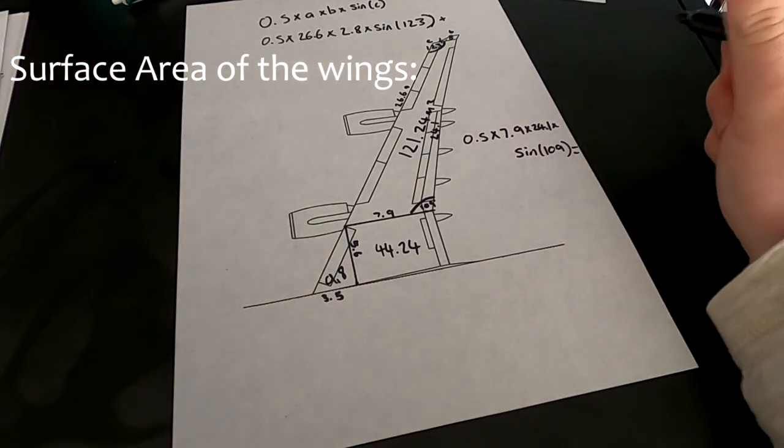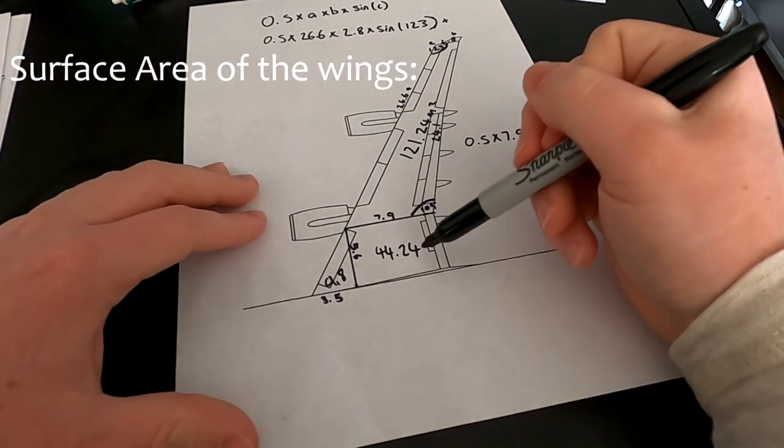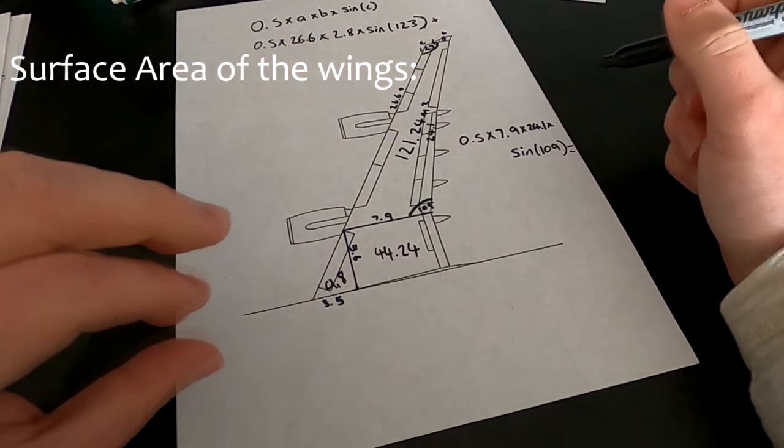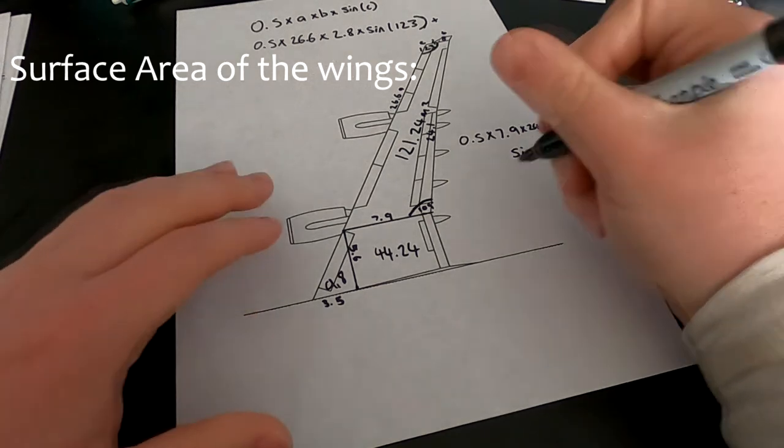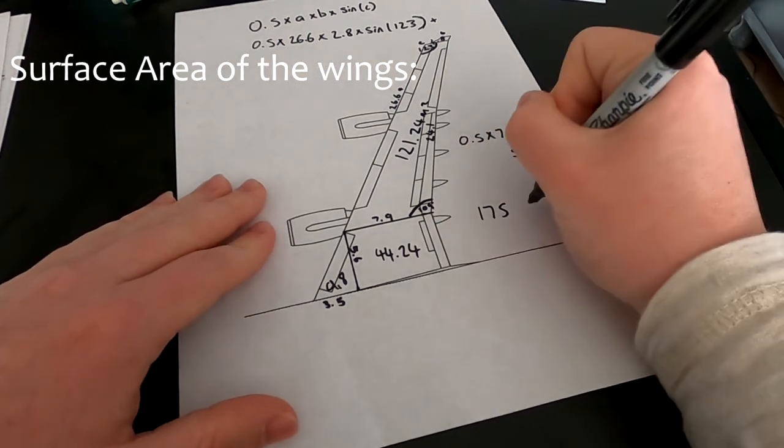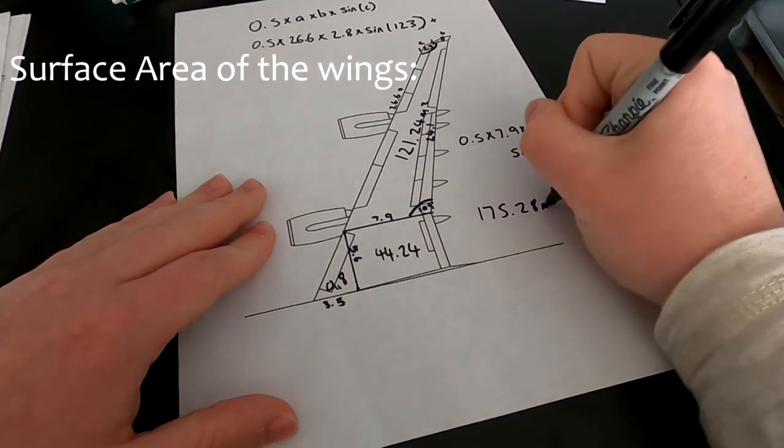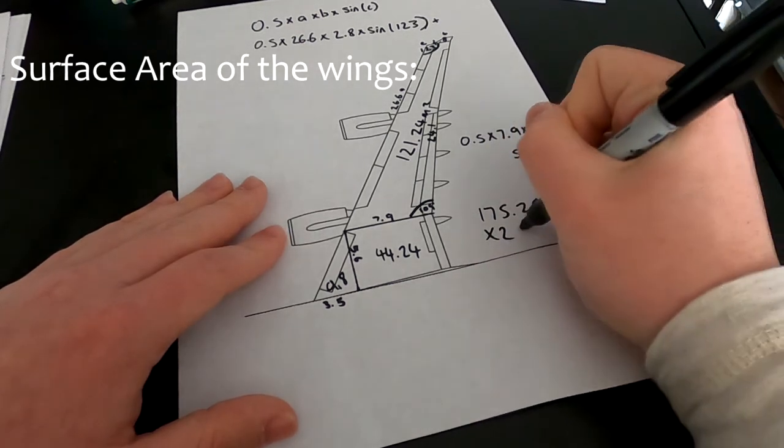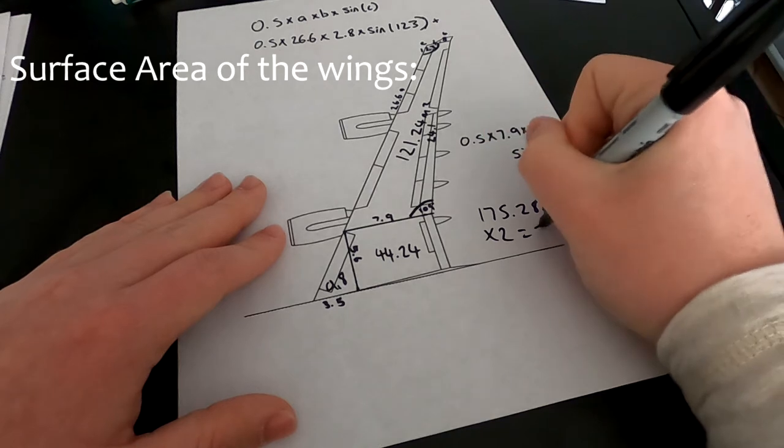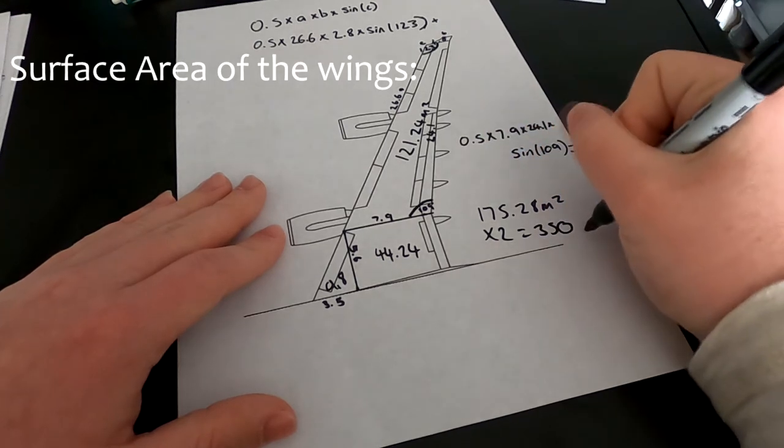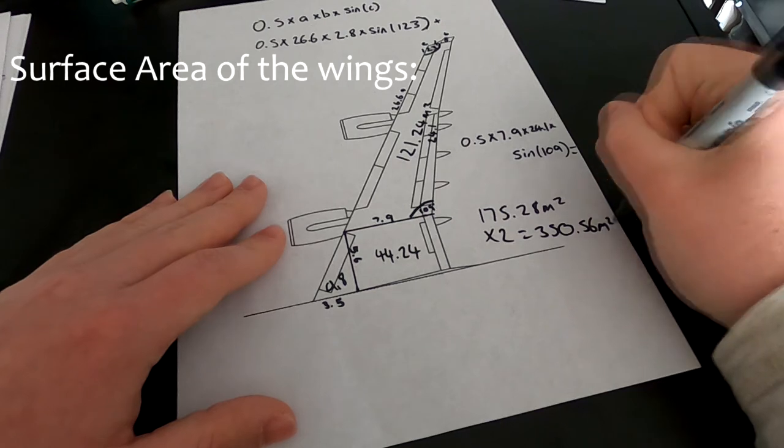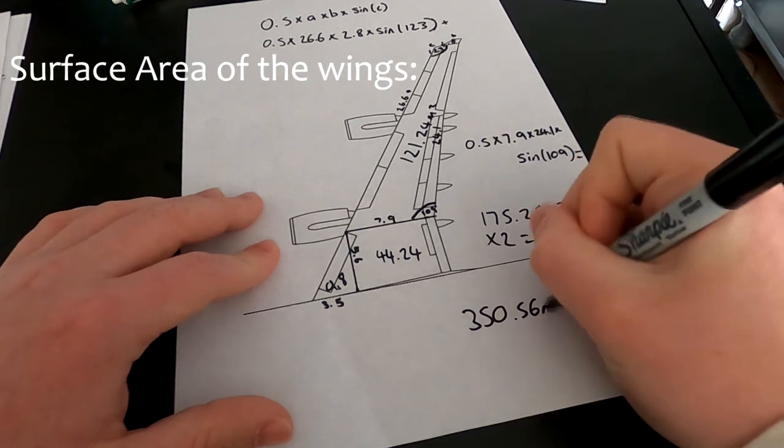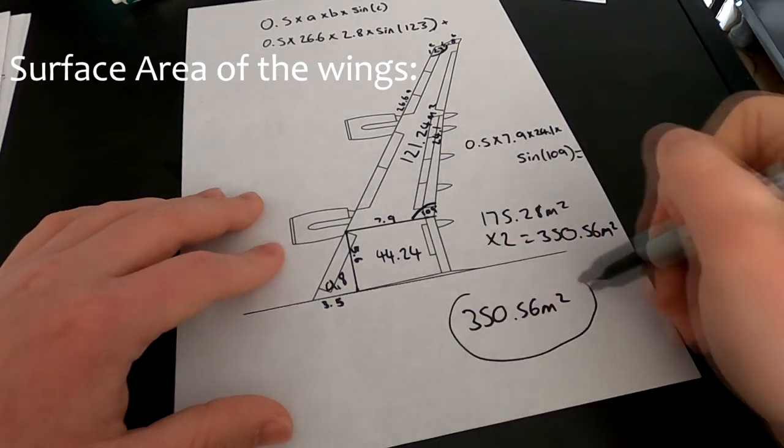So, to get the total area of the wing, we then just have to add 9.8 plus 44.24 plus 121.24. And that answer is 175.28 meters squared. And then we just have to multiply that by 2, which is 350.56 meters squared. And 350.56 meters squared is the area of both wings.